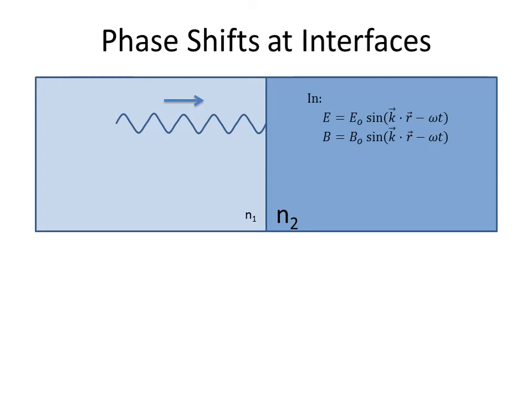If we go from a low index of refraction, n1, to a high index of refraction, n2, we start off with a wave that has both an electric and a magnetic field, and they both have the same sinusoidal values and peak values. When we hit the interface,